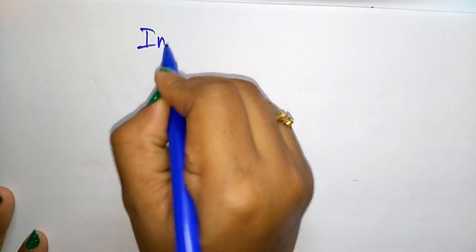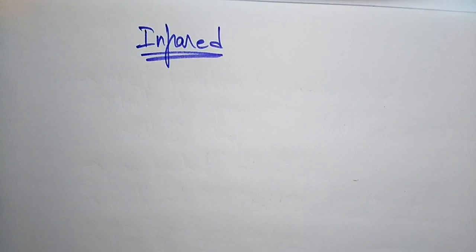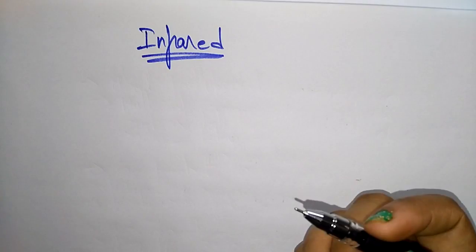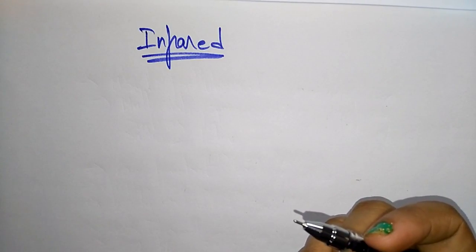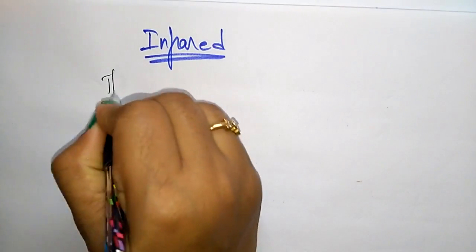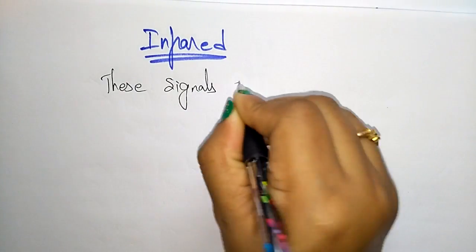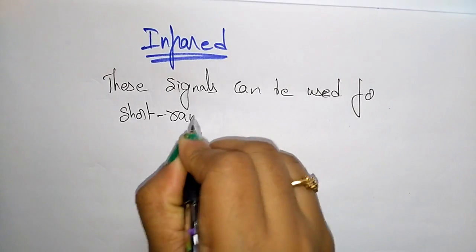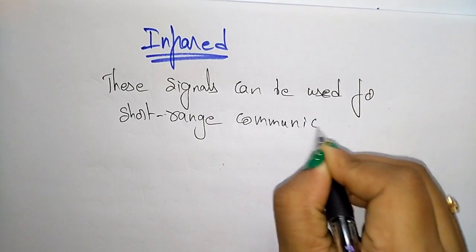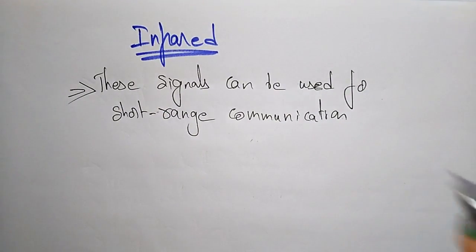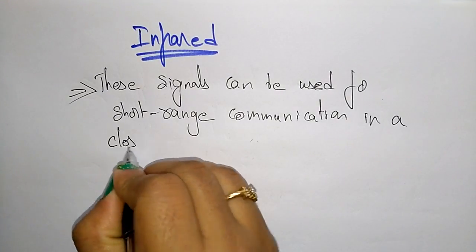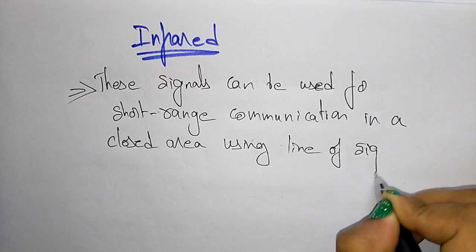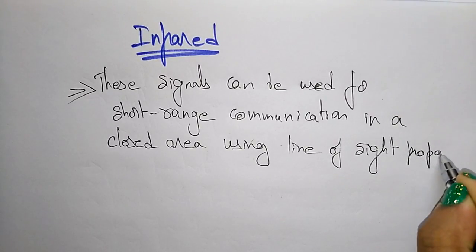The last type of unguided transmission media is infrared rays. Everyone is familiar with infrared — AC remotes, TV remotes, speakers, and home automation all use infrared communication. These signals can only be used for short-range communication in a closed area, using line-of-sight propagation.